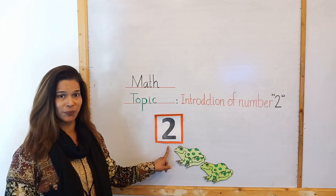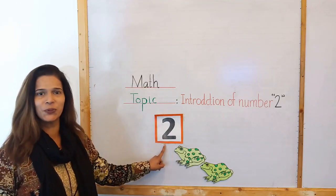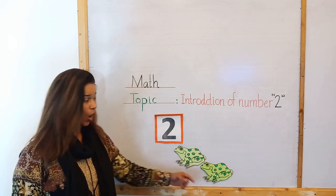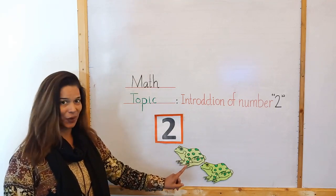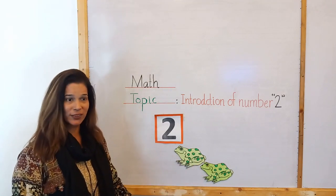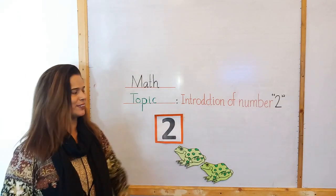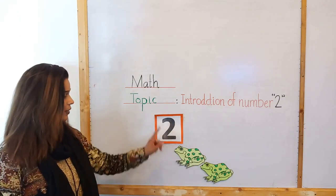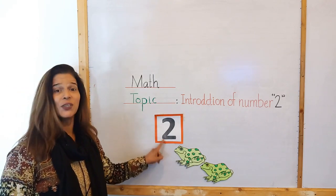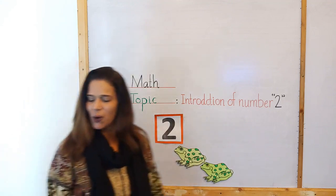So what comes after number one? Number two! Very good. So this is number two. Wow, here are frogs. How many frogs? Let's count: one, two. How many frogs? One, two. Very good! Here are two frogs.